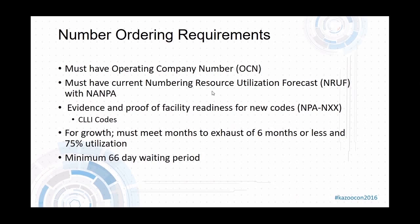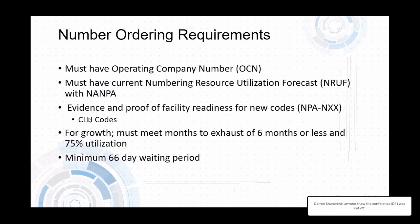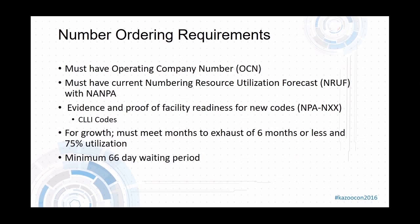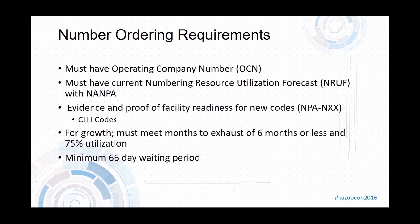Carriers must also provide proof of facility readiness if they are opening up a new code or NPA NXX. A lot of times they'll have to provide their carrier switch identification or CLLI code showing which areas they serve. They also need a months-to-exhaust forecast, meaning they have to demonstrate they have at least 75% usage and will run out of numbers within the next six months before they can apply for more.